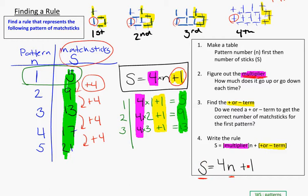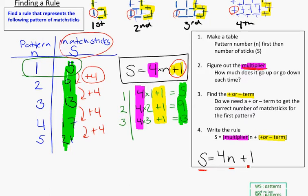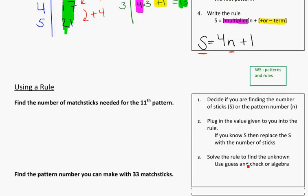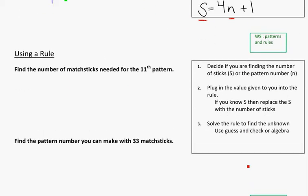I'm actually using that rule to make predictions or to find stuff out. So let's scroll down to the next bit, and I'm going to rewrite our rule: S is equal to 4n plus 1.